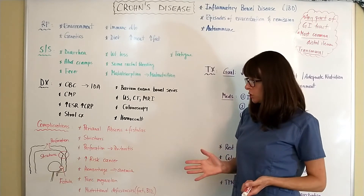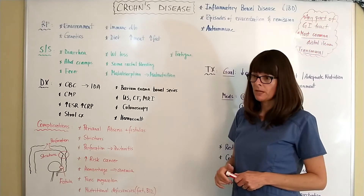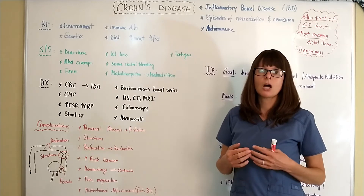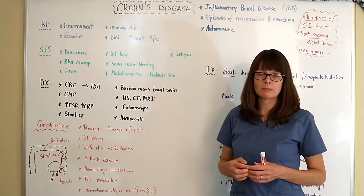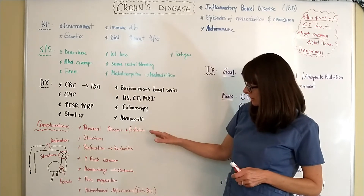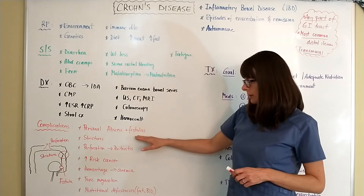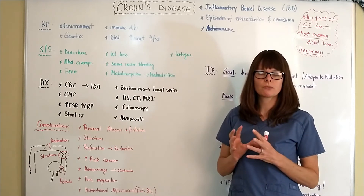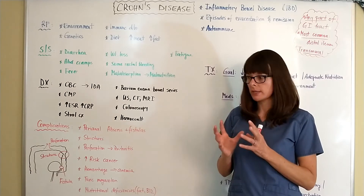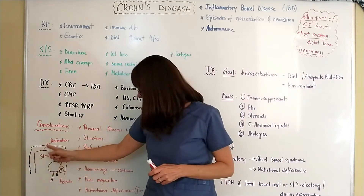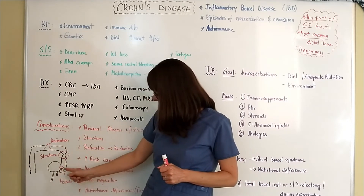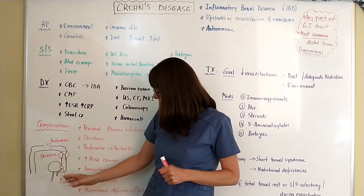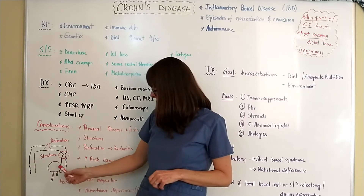Complications from Crohn's disease are many, and depend on how long the patient has had Crohn's disease, the severity of their symptoms, and how many exacerbations they've had. There can be a perianal abscess and fistula. Fistulas are an abnormal opening between two different body systems or organs — for example, between the colon and the bladder.